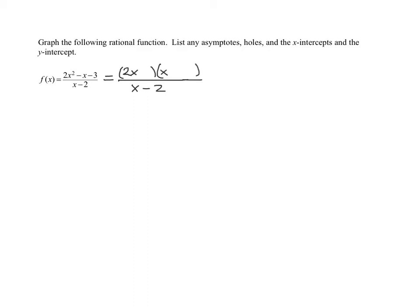One's going to be positive, one's going to be negative. After a little trial and error, I think you can see I need the 3 here and the 1 here. This needs to be negative and that needs to be positive. So when I foil it out, 2x squared plus 2x minus 3x is negative x and minus 3. So the reason we did this was to see if anything reduced. Well, nothing reduces.